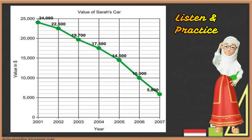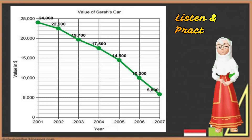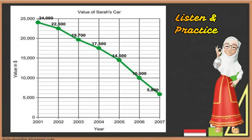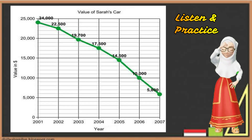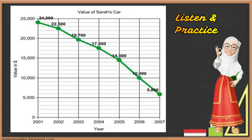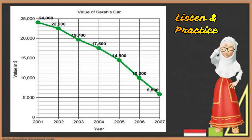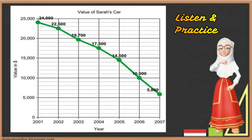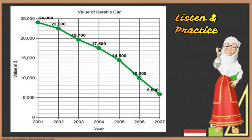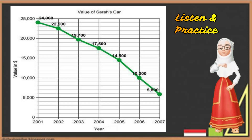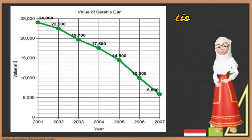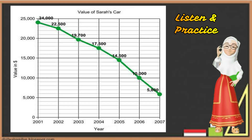The value of my car was in the range of twenty-four thousand dollars in 2001, but after six years its value dropped rapidly. From 2001 to 2002, the reducing value was only one thousand five hundred dollars. This really changed from year 2005 to 2006. The range of value from 2005 to 2006 was almost similar to the range from 2006 to 2007.